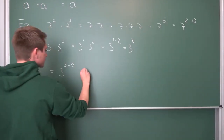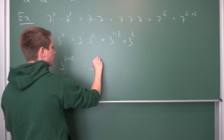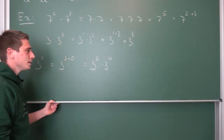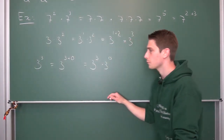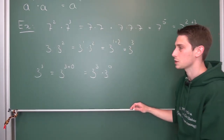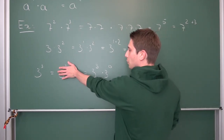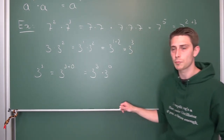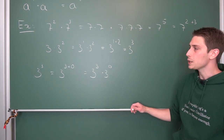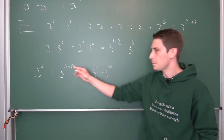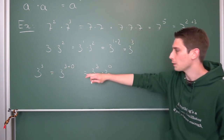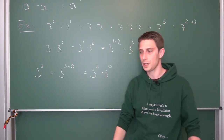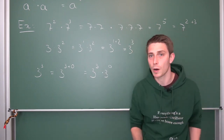And now we are just going to reverse the rule we have here. 3 to the power of 3 plus 0 is nothing but 3 to the third power times 3 to the 0 power. Now we have: 3 cubed is nothing but 3 cubed times 3 to the 0 power. How can we get back to 3 cubed if we multiply 3 cubed by some other element?